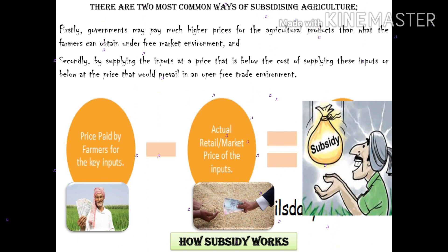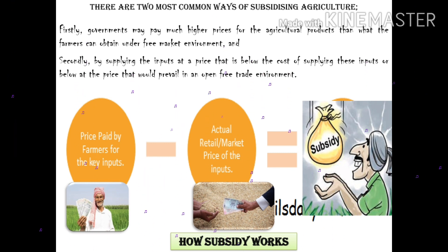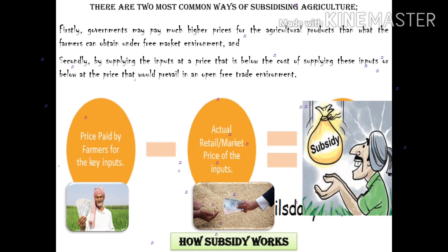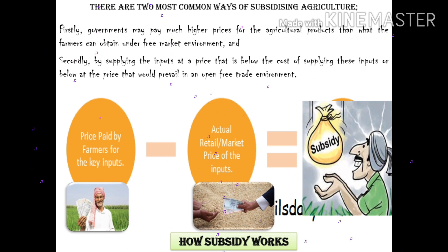The government may pay a much higher price for agriculture products than what the farmer can obtain under a free market environment. This is done by supplying inputs at a price that is below the cost of supplying them, or below the price that would exist in an open free trade environment — that is the actual retail price. This is what we call subsidies.